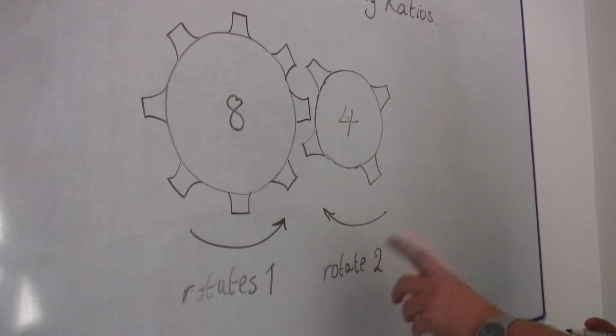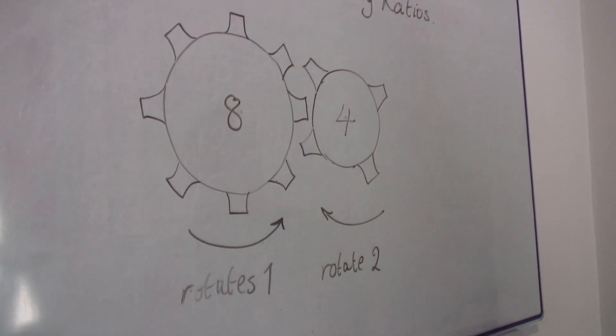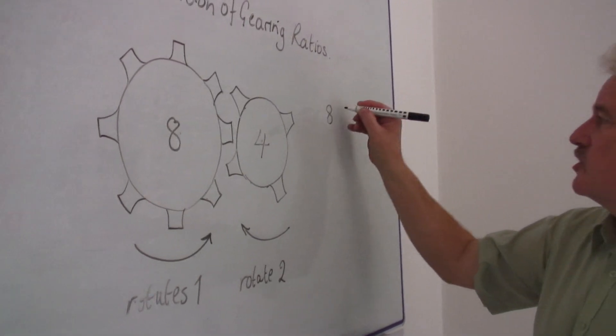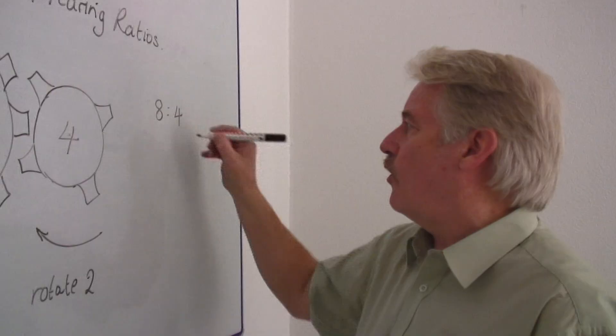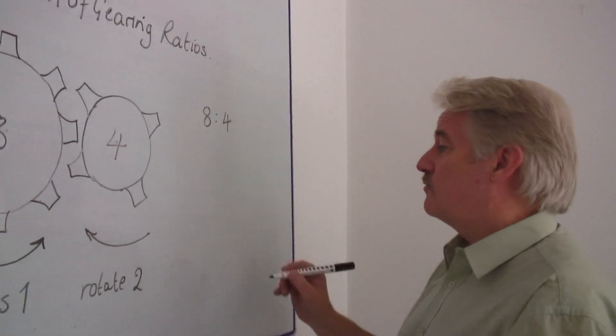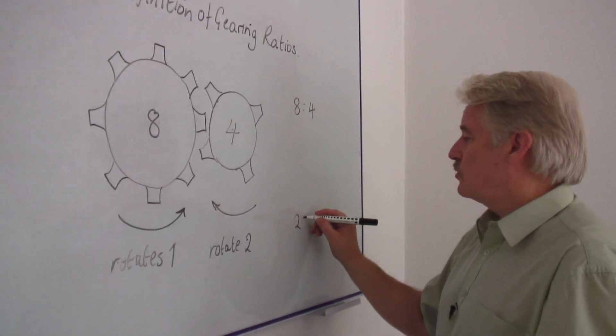Now normally when we're defining ratios, we can say the ratio here is eight to four. But of course we can simplify that and in fact the ratio is two to one.